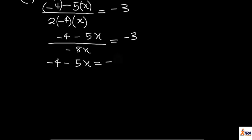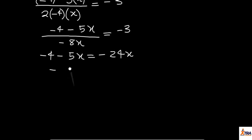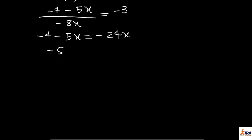8x equals minus 3, which will then give me minus 4 minus 5x equals minus 24x. Rearranging, minus 5x plus 24x equals 4.